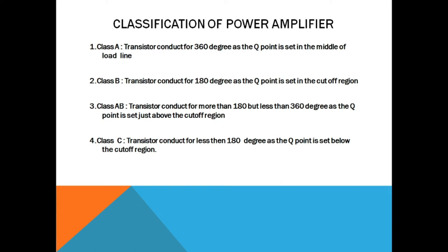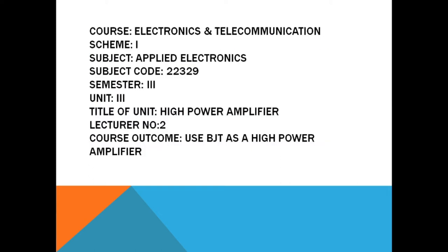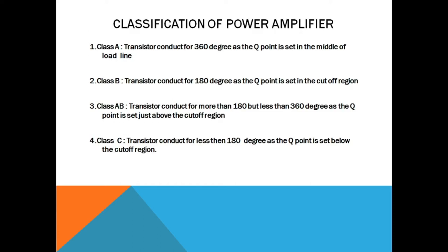The high power amplifier, or power amplifier, is classified as a class A power amplifier, class B power amplifier, class AB power amplifier, and class C power amplifier.